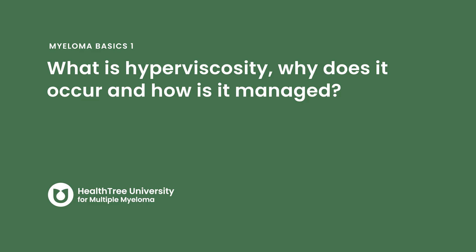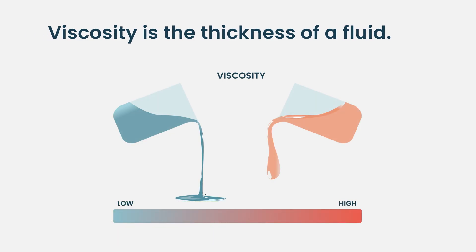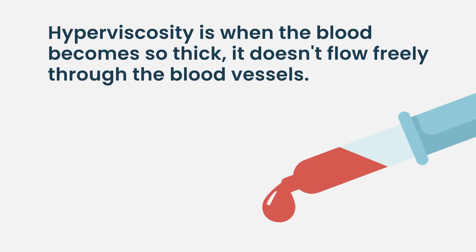What is hyperviscosity, why does it occur, and how is it managed? Viscosity of any fluid — in very simple terms as a non-physicist — tells you about the thickness of that fluid. Here we are concerned about the viscosity of blood or plasma circulating in our bloodstream. There are situations where our blood becomes thick or more viscous, which is not good for circulation and can cause potentially life-threatening symptoms. When the viscosity of circulating blood or plasma becomes high, that is by definition hyperviscosity.